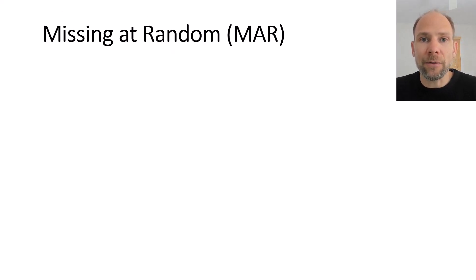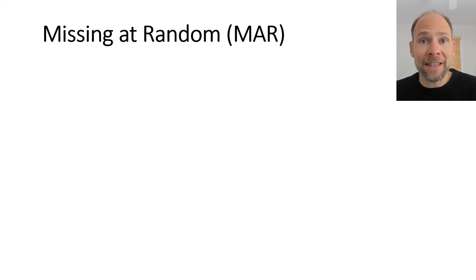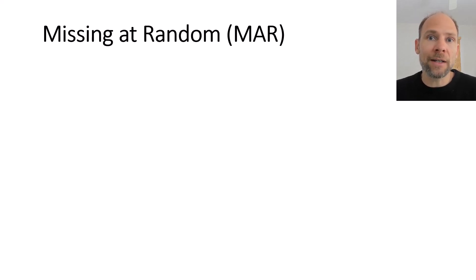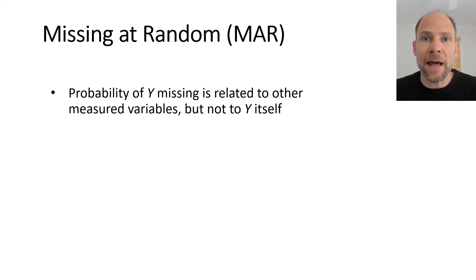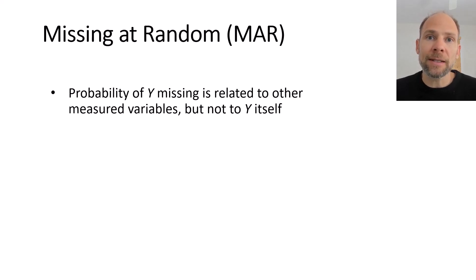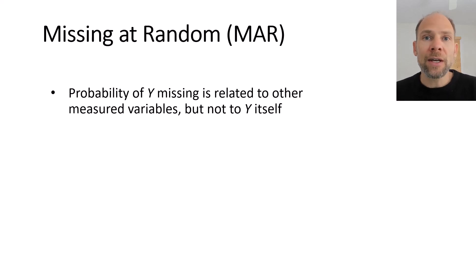Next is the missing at random mechanism, which is often misunderstood — it sounds like missing completely at random, so you might think it means missingness is unrelated to the data, but that is actually not the case. Missing at random is a systematic missing data mechanism; however, it is also a benign mechanism. MAR means that the probability of missing income scores is related to other variables that are in your data, but not related to income itself.